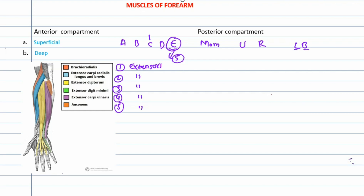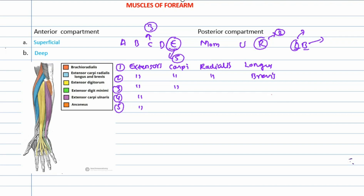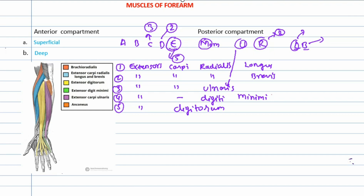Continuing the mnemonic: 'C' stands for carpi, used 3 times; 'R' for radialis, used 2 times — giving extensor carpi radialis longus and brevis. 'L' for longus and 'B' for brevis — simple as that. Then 'U' for ulnaris, giving extensor carpi ulnaris. Then 'D' used twice: extensor digitorum and extensor digiti minimi — 'M for mom' gives minimi — and the second D gives extensor digitorum itself.